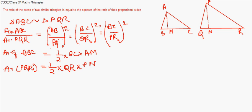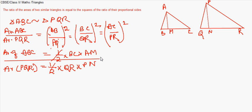On the other hand, area of PQR is also half base times altitude. We find the ratio by writing it in ratio form. The halves cancel, so area of ABC by area of PQR equals BC × AM by QR × PN.